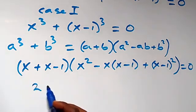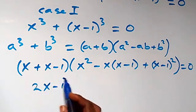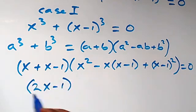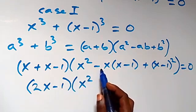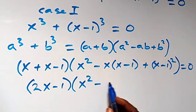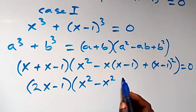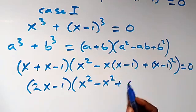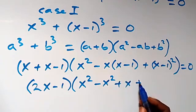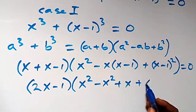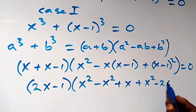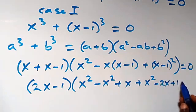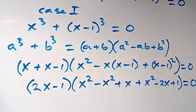Simplifying: x plus x gives two x minus one. Inside the bracket, we have x squared, then minus x times bracket x minus one which expands to minus x squared plus x, plus the expansion of bracket x minus one squared which is x squared minus two x plus one. Close bracket equals zero.